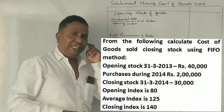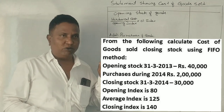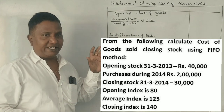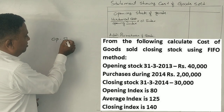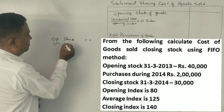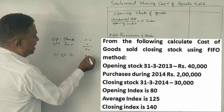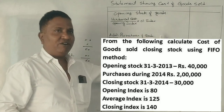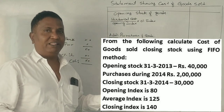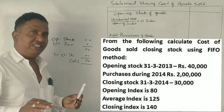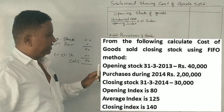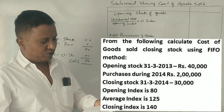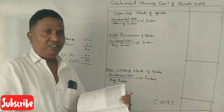Today we are looking at inflation accounting and the impact of price level changes on cost of goods sold. The formula for cost of goods sold is: opening stock of goods plus purchases of goods minus closing stock of goods equals cost of goods sold.